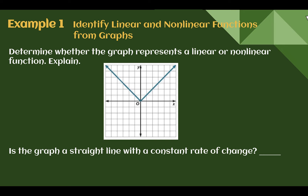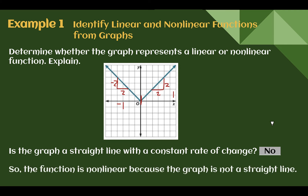Example 1: Identify linear and non-linear functions from graphs. Determine whether the graph represents a linear or non-linear function and explain. We should ask: is this graph a completely straight line? It is not a completely straight line — it's made up of two parts that are straight lines, but altogether it is not one completely straight line. Here the rate of change is negative 2 over 2, so negative 1, and here it is 2 over 2, or positive 1. They are not the same, so this is non-linear.